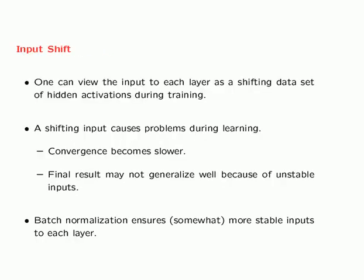Another way of understanding why batch normalization helps: if you view the input to each layer as a shifting dataset of hidden activations, you can see why a shifting input causes problems during training. There are two problems caused by the shifting input to each hidden layer over different iterations: convergence becomes slower, and the final result may not generalize well because of the unstable inputs. Batch normalization ensures more stable inputs to each layer, which ensures more stable convergence.